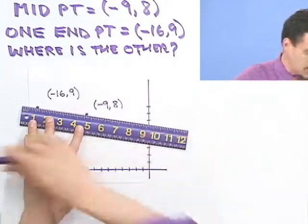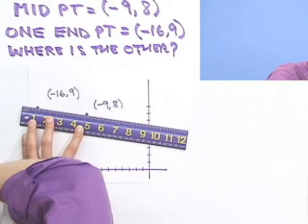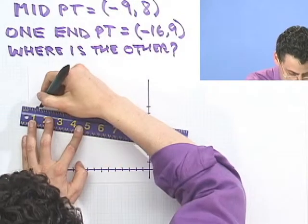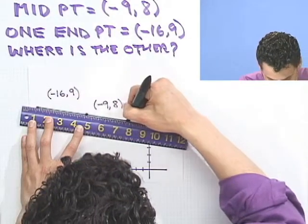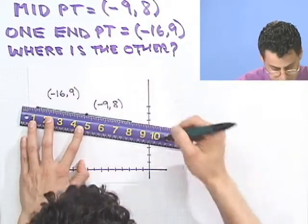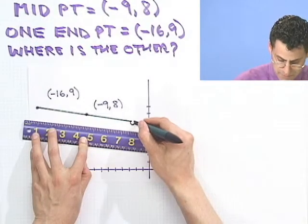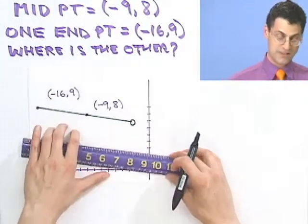And if we connect them with a line, and then what we do is just continue that line past the midpoint the same distance, it would give us a rough sense, like maybe right around there. I don't know, that's about it. Someplace around here is going to be the other point, and that's what we're trying to locate.